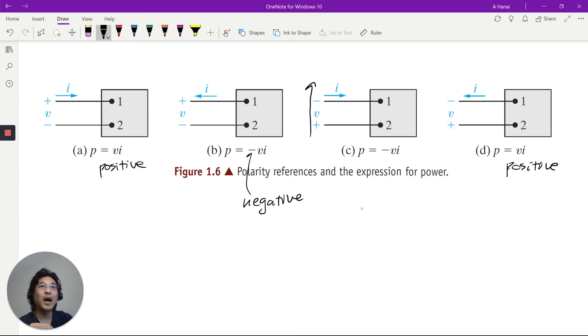And then same over here. Look. Voltage drop is from two to one, but the current is going from one to two. That's why there's that negative.